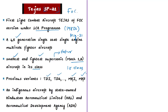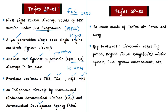The term 'Tejas' means radiance in Sanskrit. Tejas is an indigenous aircraft designed and developed by state-owned Hindustan Aeronautical Limited (HAL) and the Aeronautical Development Agency (ADA) as part of the LCA program, to meet the diverse needs of the Indian Air Force and Indian Navy. ADA is an autonomous organization under the Department of Defense Research and Development in the Ministry of Defense of the Government of India.